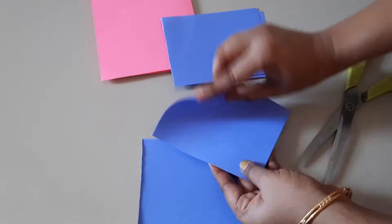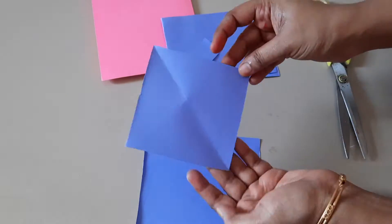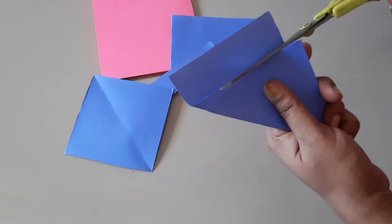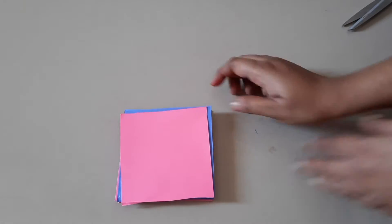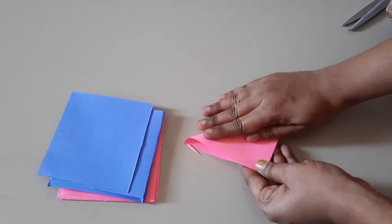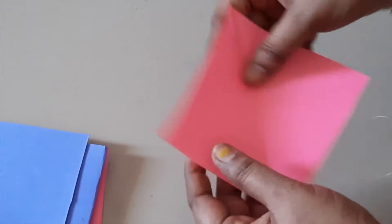We will cut one color paper, then cut two colors. We will cut a small square. We will cut a small square and cut the paper into squares.